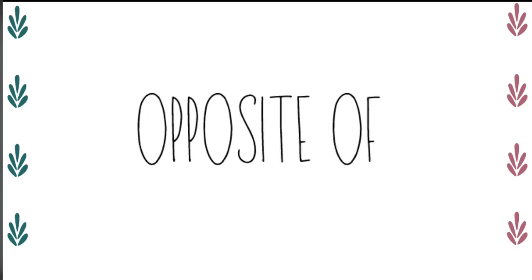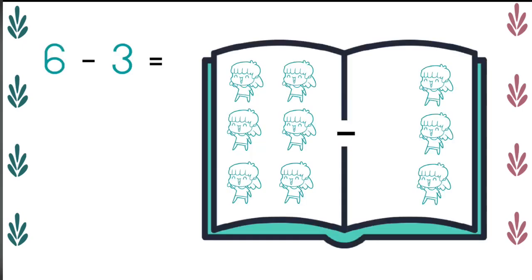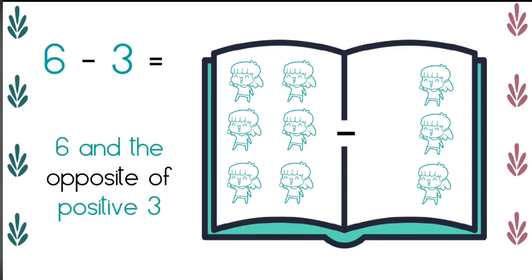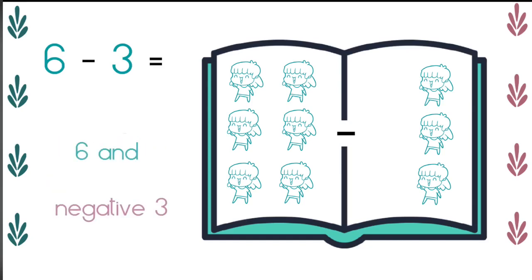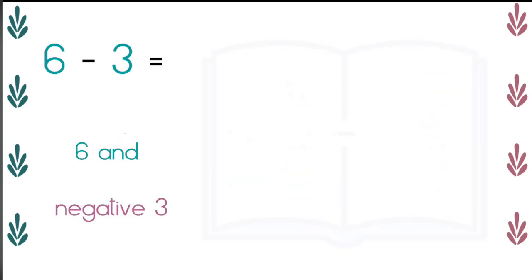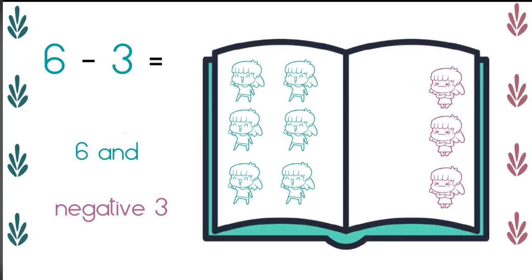So we're gonna start off with this problem. Six minus three, where six is positive and three is positive. All these little girls are happy. But we're gonna replace subtraction or minus with the words opposite of. We're gonna rewrite this as six and the opposite of positive three. What is the opposite of positive three? It is negative three. So our three positive girls become negative or unhappy.